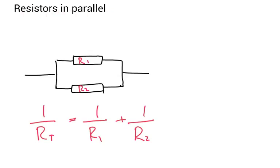Now this is the formula for resistors in parallel: 1 over RT is equal to 1 over R1 plus 1 over R2.